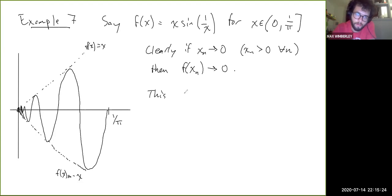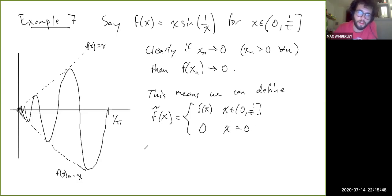So now if this is true, this means we can define f tilde of x equals f of x for x in (0, 1/π], and then 0 for x equals 0. And f tilde will be a continuous extension of f to the domain [0, 1/π], the closed interval.